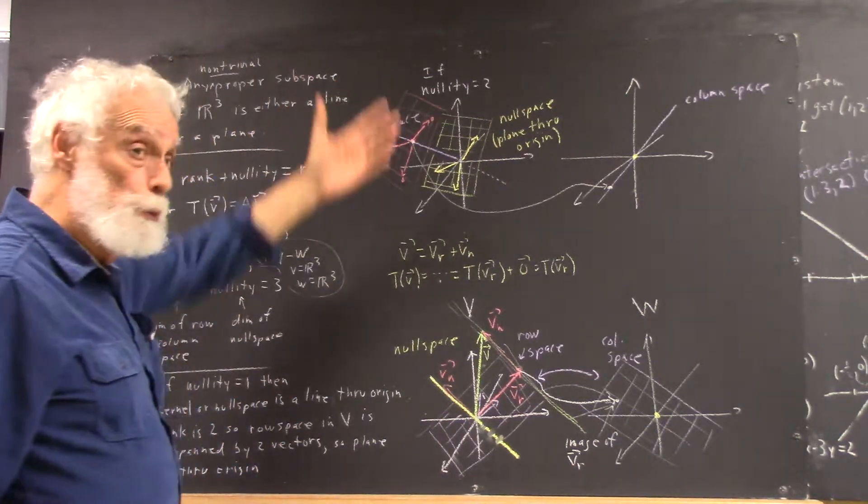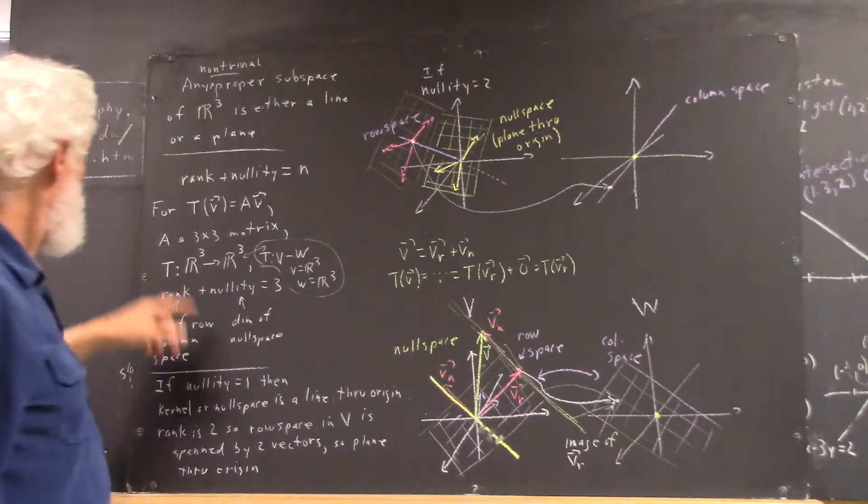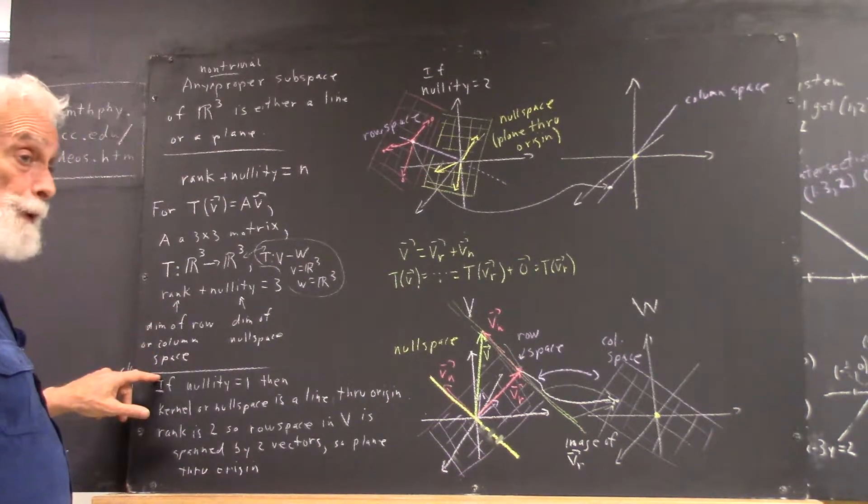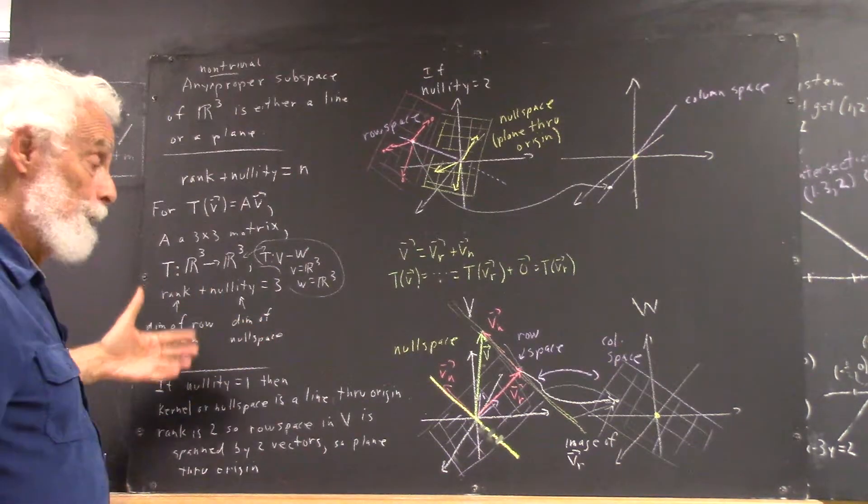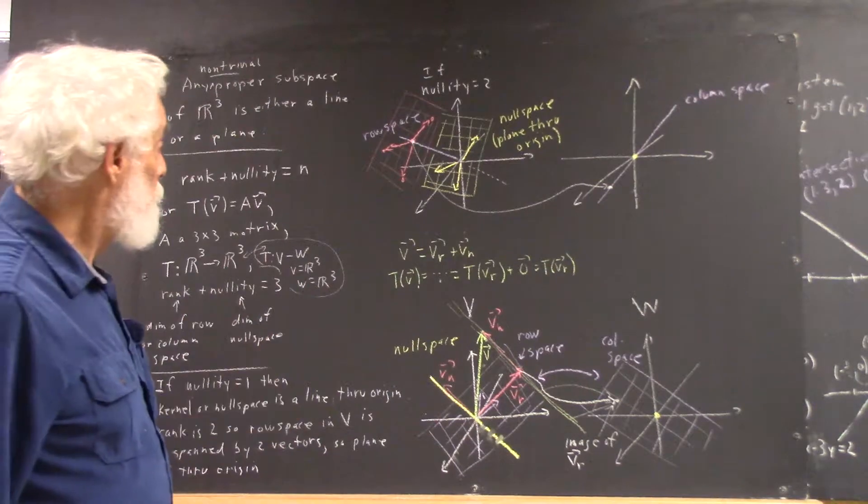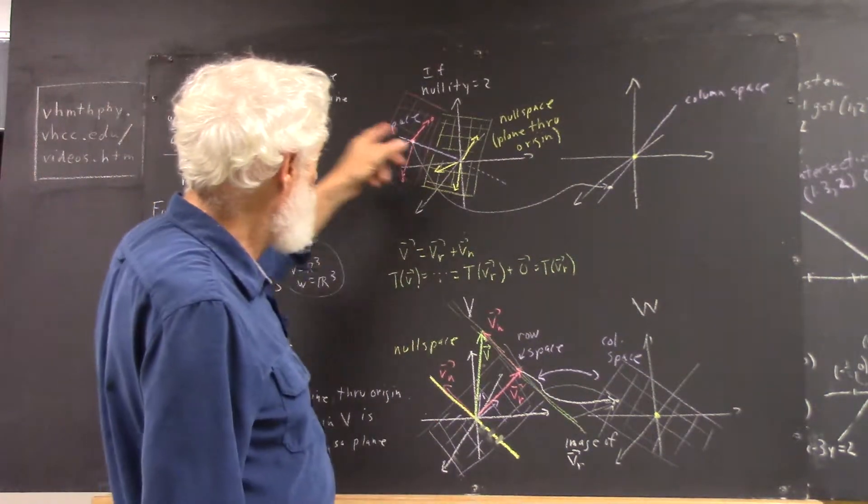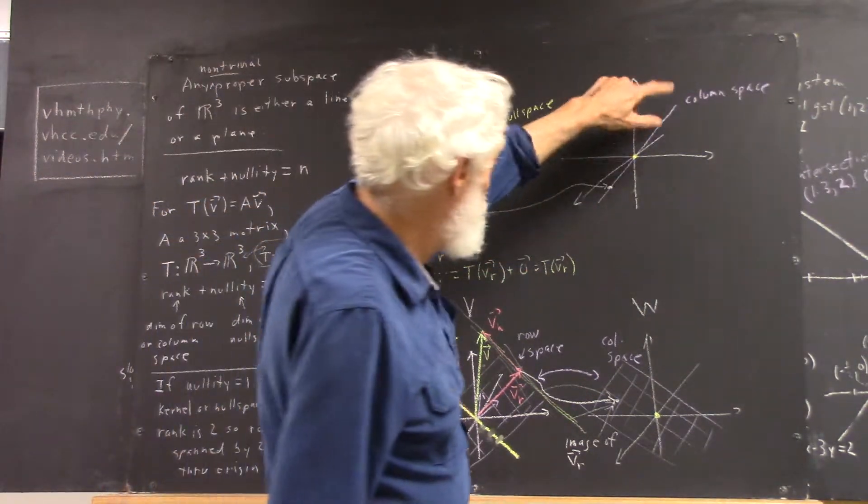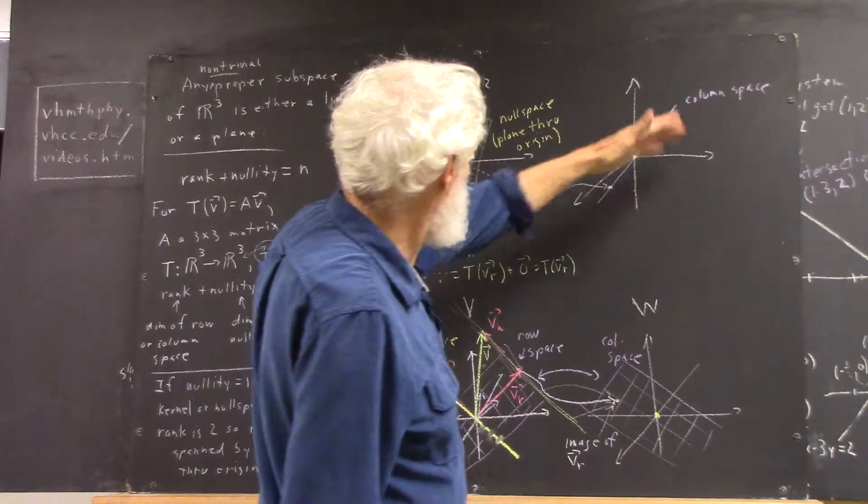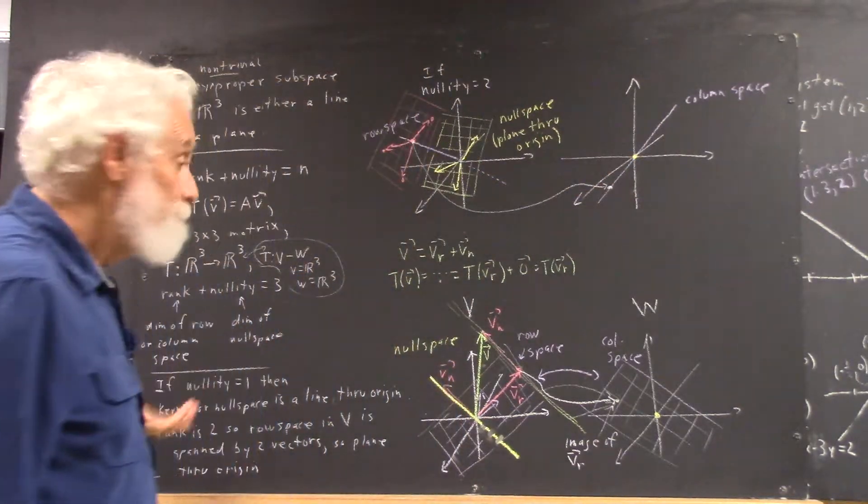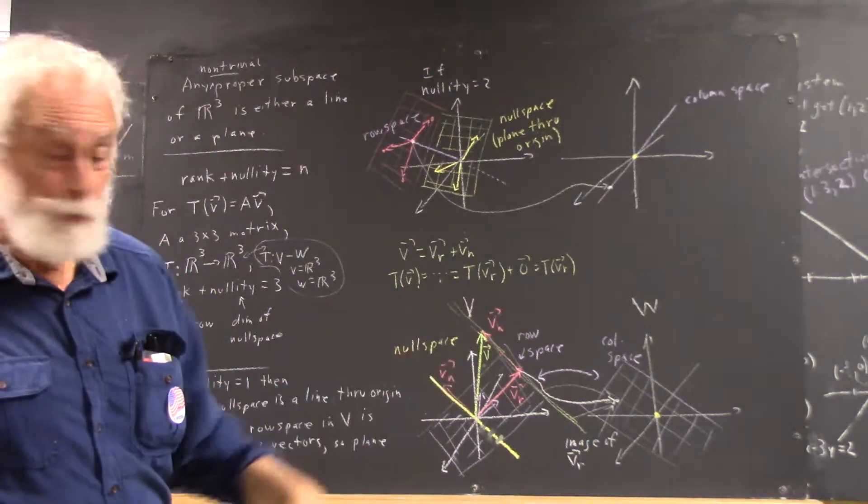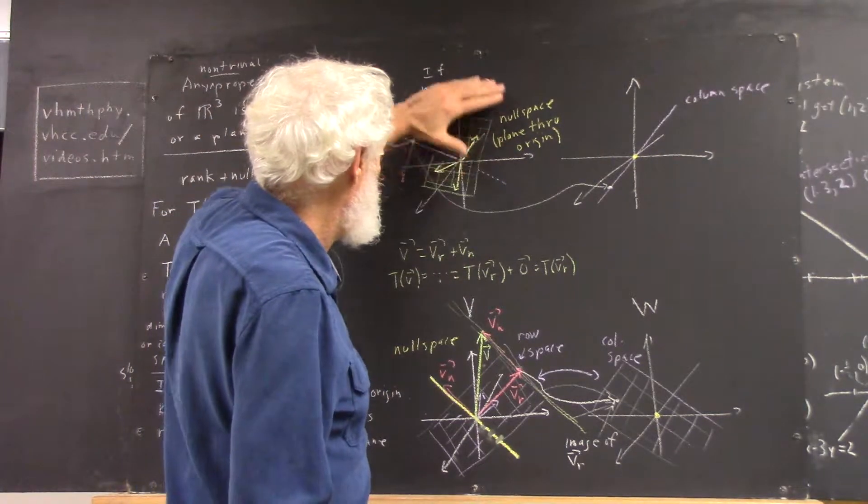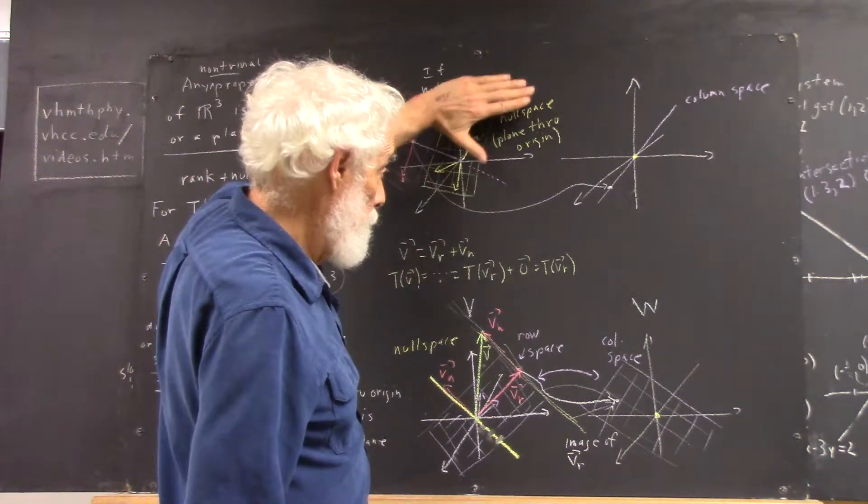Now, if the nullity is 2, that means that the rank is 1, so the column space and the row space have dimension 1. So we're going to have something like this, using purple for the row space and the column space. There are going to be lines, and the null space, having dimension 2, is a plane.